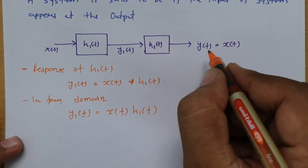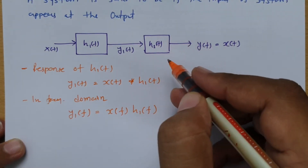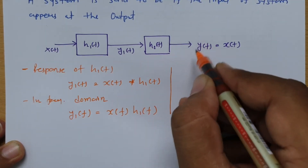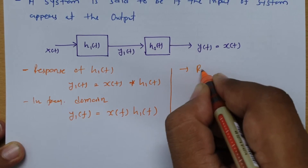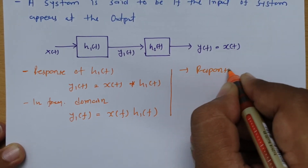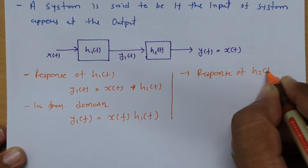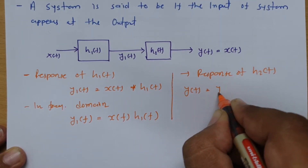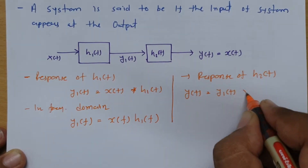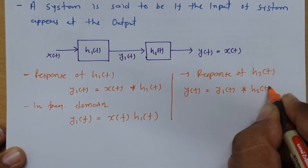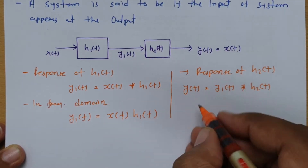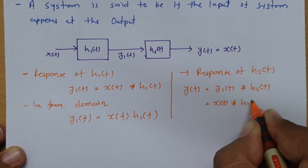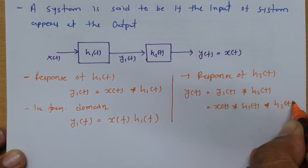Now when you place another system h2(t), you will be getting output y(t). The response of h2(t) gives y(t) as the convolution of y1(t) with h2(t). Substituting y1(t), we find: y(t) = x(t) * h1(t) * h2(t).